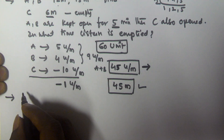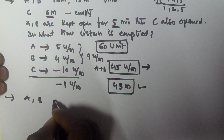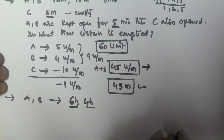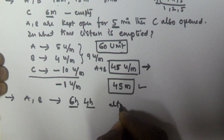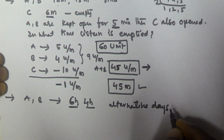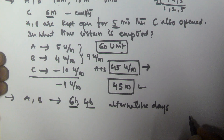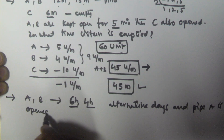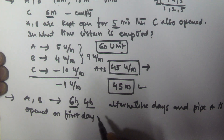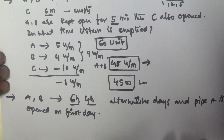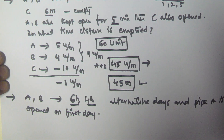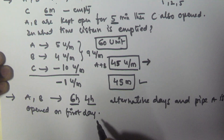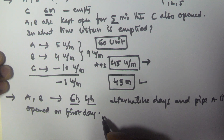Let's see another example. Two pipes A and B can fill the tank in 6 hours and 4 hours respectively. If they are opened on alternative days, and pipe A is opened on the first day, in how many hours will the tank be filled? So A takes 6 hours and B takes 4 hours, they work on alternate days with A starting on day one — we have to find the total time to fill the tank.